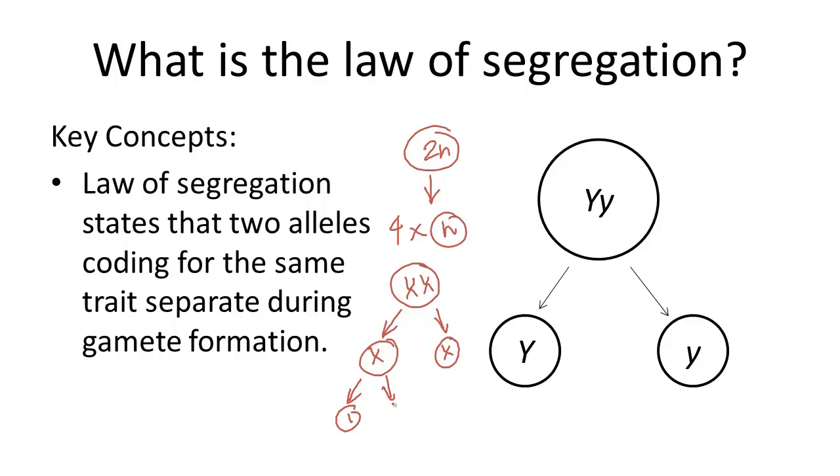And then during meiosis II, the sister chromatids separate. And as a result, you have four genetically different haploid cells.